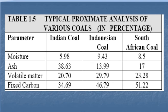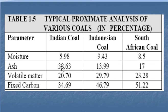Here is a table comparing proximate analysis of Indian coal, Indonesian coal, and South African coal. One major disadvantage of Indian coal is its very high ash content. Indonesian coal has ash of around 13-17%, whereas Indian coal averages 30-40% ash, and sometimes even reaches 45% ash.